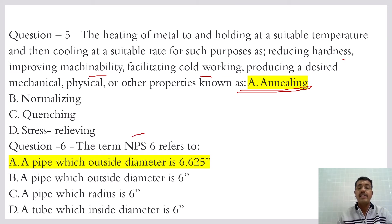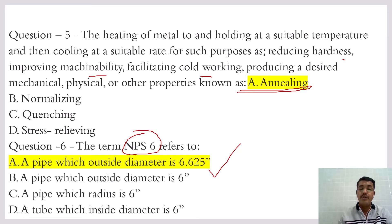What does NPS 6 mean? NPS 6 means the nominal pipe size 6, whose outside diameter is 6.625 inches. That you need to remember.